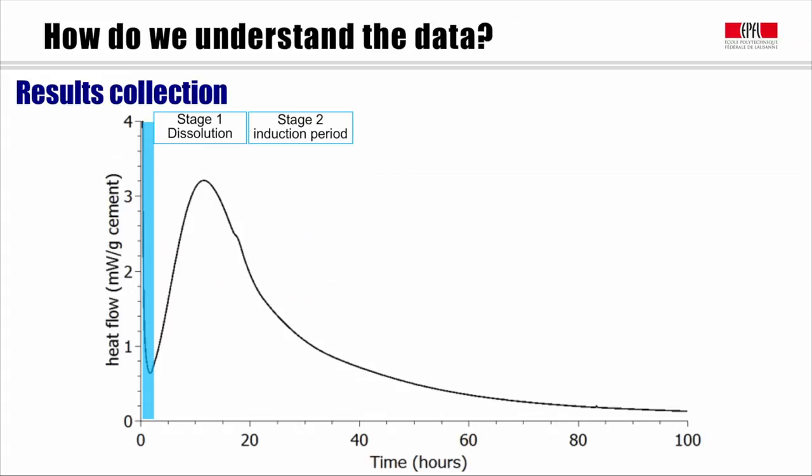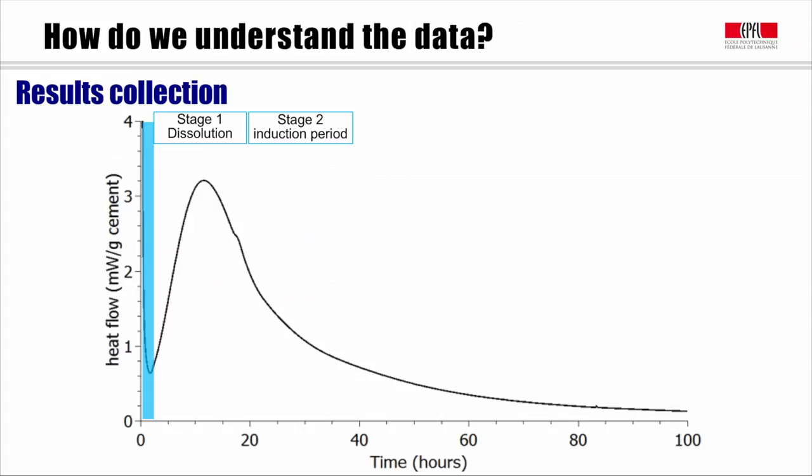These two stages are associated with the dissolution of ions from solids. The dissolution rate controls the kinetics and the dissolution is higher when the ion concentration in the solution is lower. After some time when the ion concentration goes higher, the dissolution rate slows down. Factors such as the fineness of the particle, density of critical defects, temperature and admixtures will all influence the duration of these two stages.